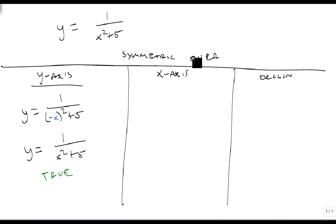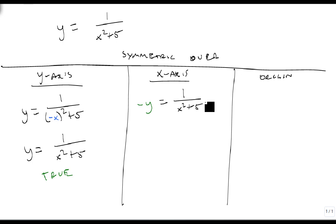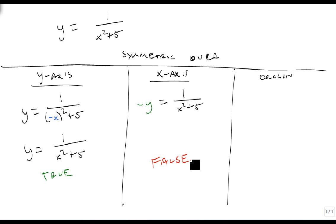For the x-axis test, we do the same thing except instead of replacing x, we replace y. So we start with -y equals 1/(x² + 5). We can't do anything else — this is just a negative y, and since this isn't the same as the original, this is false. It is not symmetric over the x-axis.